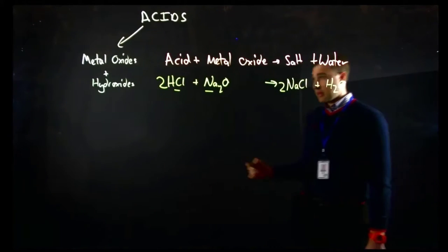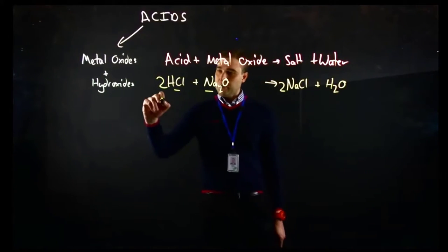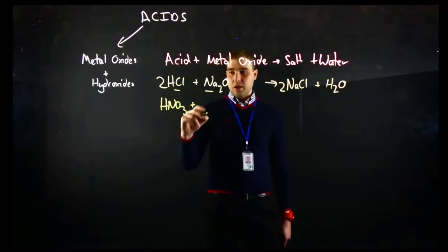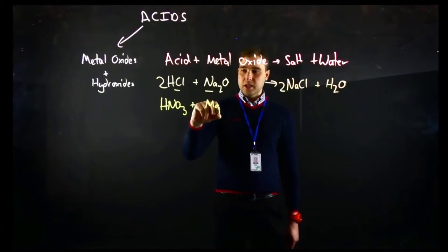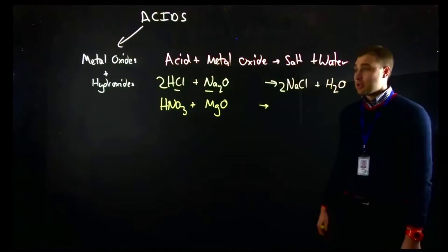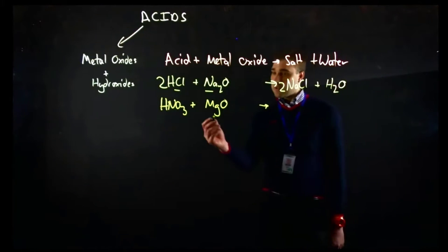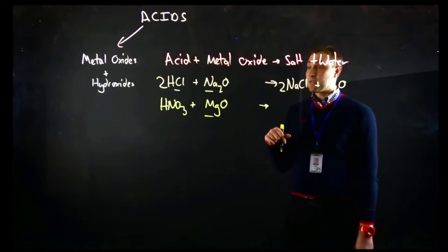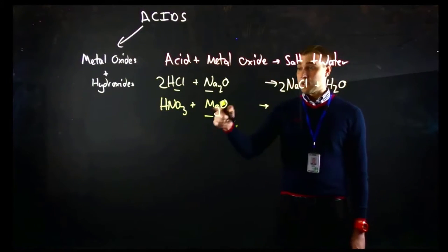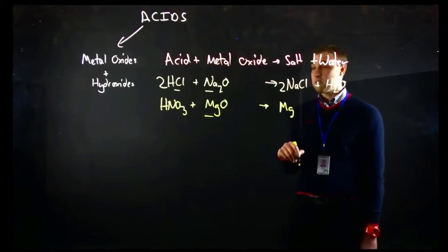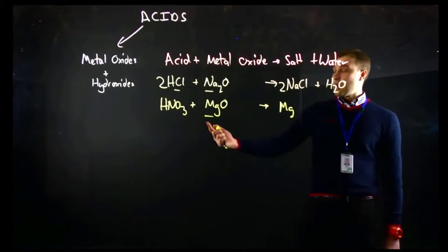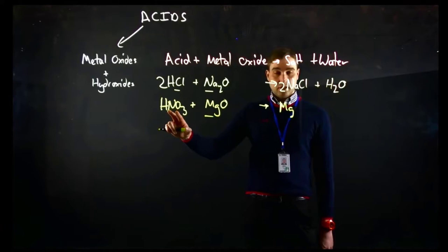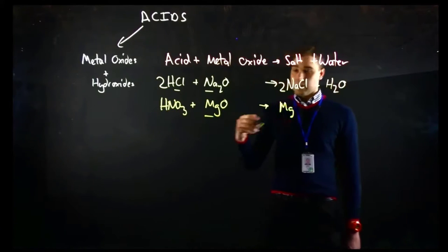In this example we'll look at the reaction between nitric acid and magnesium oxide. To figure out the salt: we've got magnesium here — this is the positive part of our metal oxide, so that's going to be the positive part of the salt. We've got the negative part of the acid, so that's the nitrate ion, NO₃.